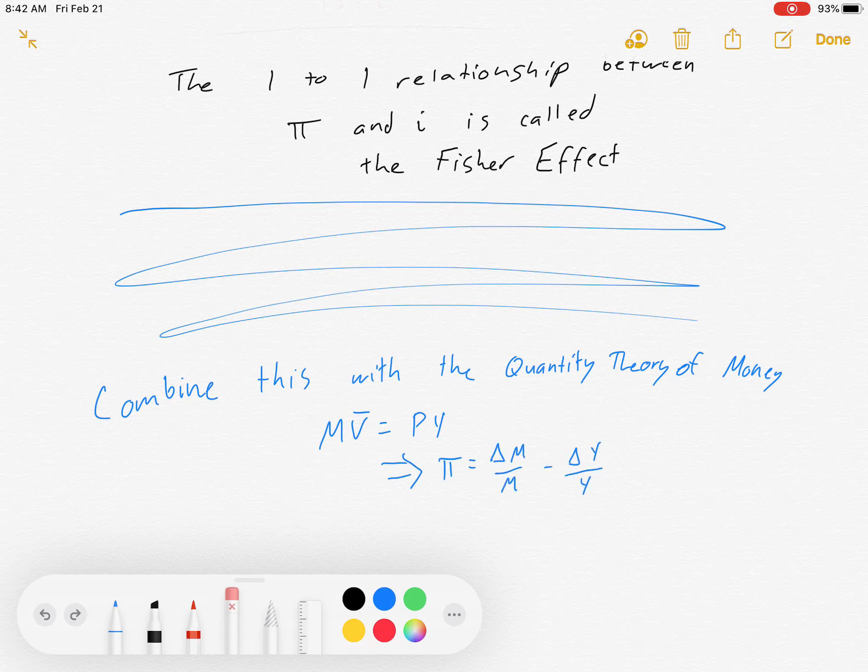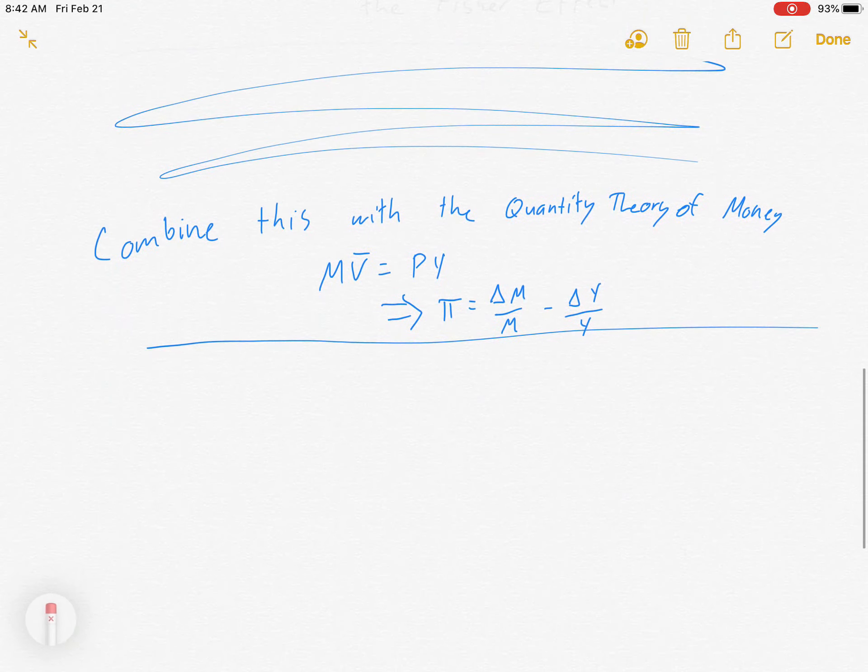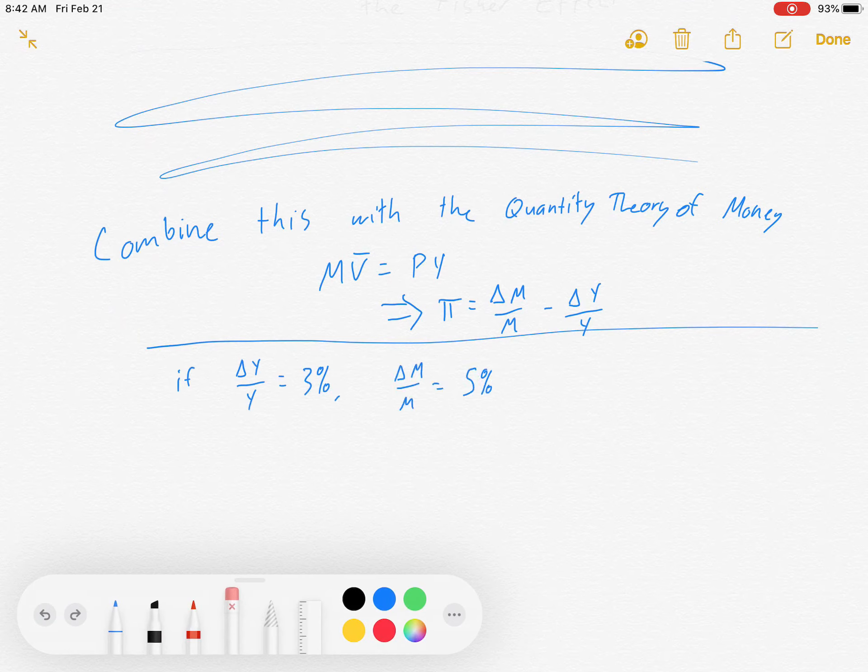Inflation is the growth rate of the money supply minus the growth rate of real GDP. We're going to start from there. Let's say that real GDP is growing at 3%, money supply is growing at 5%, and the real interest rate is 5%. Inflation then would be 5, the growth rate of money supply, minus 3, the growth rate of GDP, which is 2%.